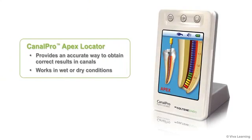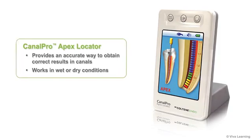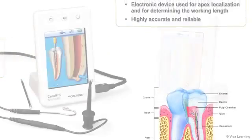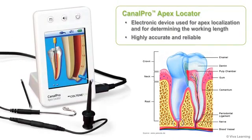Coltene's CanalPro Apex Locator solves this problem, providing an accurate way to obtain correct results in canals, whether they have wet or dry conditions. The CanalPro Apex Locator is an electronic device used for apex localization and for determining the working length — the distance between the cusp tip and an apical reference point during root canal treatment.